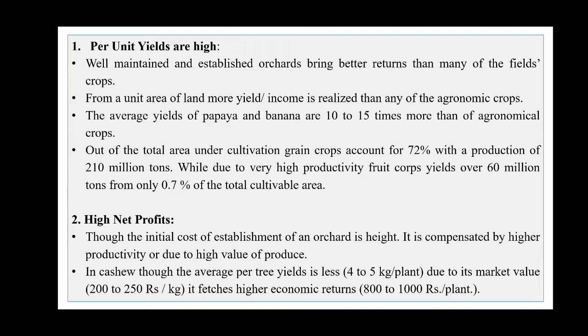Out of the total area under cultivation, grain crops account for 72 percent with a production of 210 million tons, while due to very high productivity, fruit crops yield over 60 million tons from only 0.7 percent of the total cultivable area. So as compared to the 72 percent area covered by grain crops, we are having only 0.7 percent of the total cultivable area, yet productivity is very high.